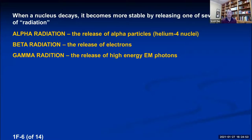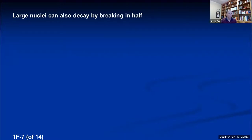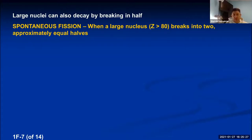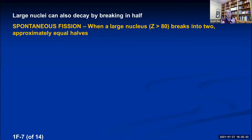Really large atoms can undergo another type of decay called spontaneous fission, where a large nucleus actually breaks in half. Spontaneous fission occurs when the atomic number is greater than 80, because you need really large repulsive forces — lots of protons in a small area — to cause this. Atoms smaller than that aren't big enough to break in half this way.